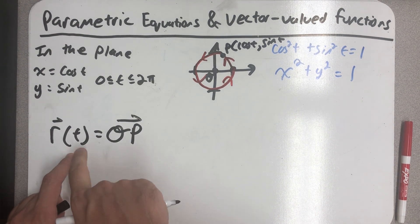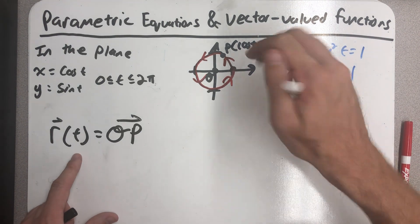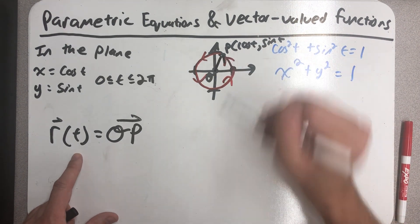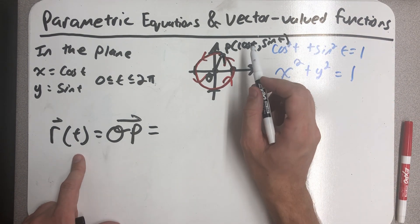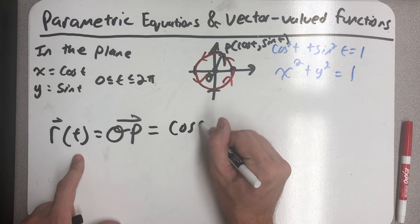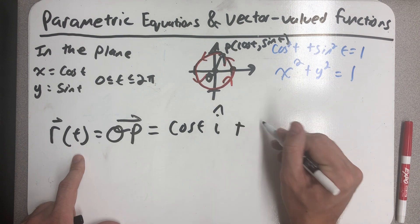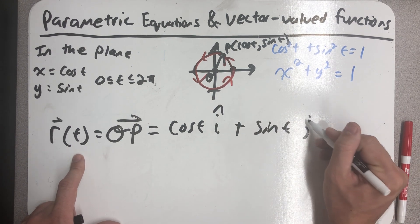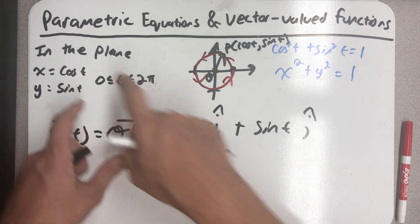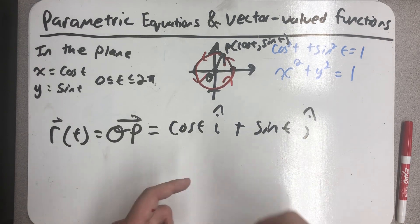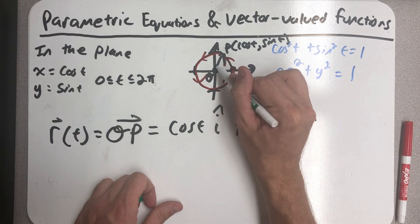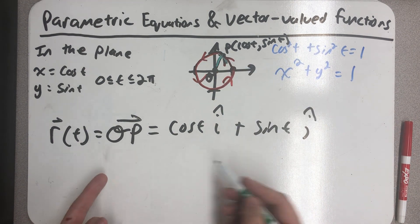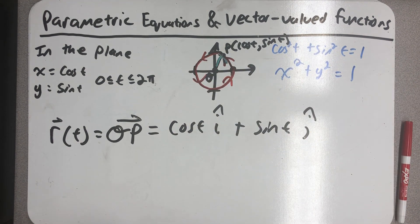I plug in a time, I plug in a value of t, and I get out this vector that points to a point on the unit circle. And I could even write down that vector in component form: cosine of t i, plus sine of t j. And those are just my x and y from my parametric equations. But now I've written them down as this vector that points from the origin to a point on the curve.